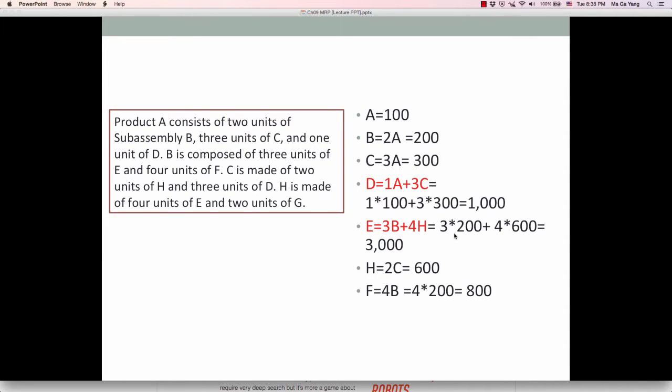So if we plug in here, 3 times 200 plus 4 times 600, which is 3000, is the E. And F is, B is composed of 4 units of F. So 4B, so 4 times 200 is 800.